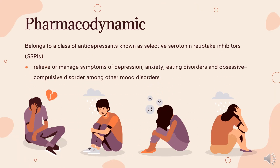Pharmacodynamics. Escitalopram belongs to a class of medications called selective serotonin reuptake inhibitors (SSRIs). These agents cause an increase in serotonin levels in neuronal synapses by preventing the reuptake of serotonin (5-HT) into the presynaptic terminals of serotoneurons. Compared to other SSRIs, it appears to have a relatively quick onset of effect due to its potency.